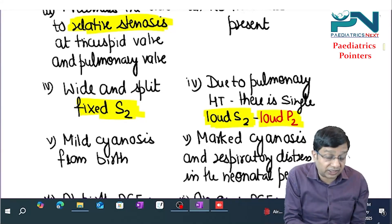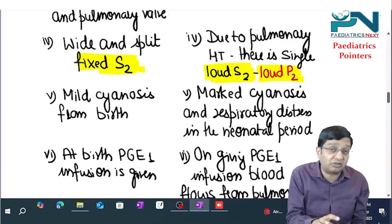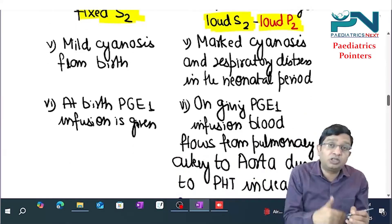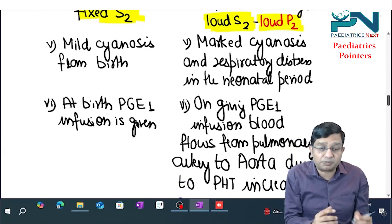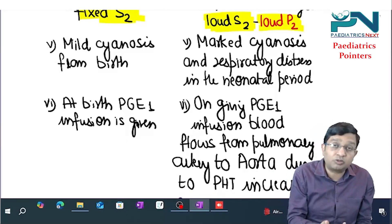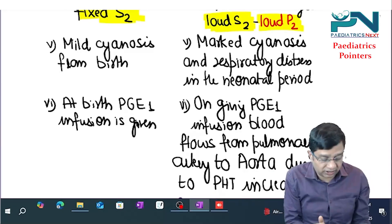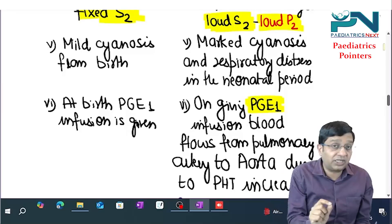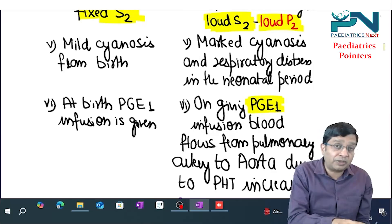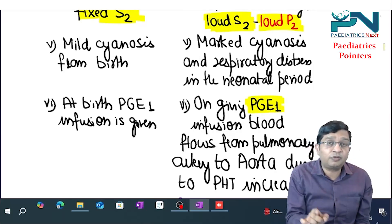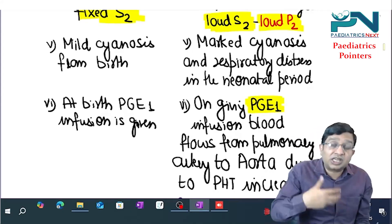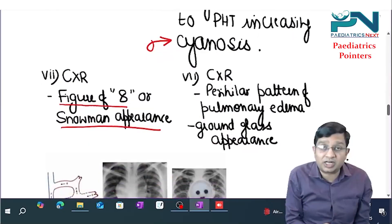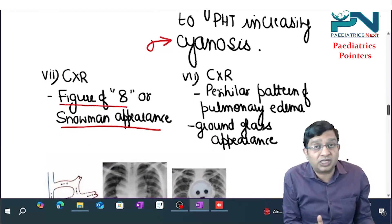The supracardiac type presents with mild cyanosis, but the infracardiac type presents with marked cyanosis and respiratory distress at birth. In the supracardiac type, prostaglandin E1 infusion is given to increase blood flow to the heart. However, in the infracardiac type, prostaglandin E1 infusion is contraindicated — because there is pulmonary hypertension, blood flows from pulmonary artery to aorta, worsening cyanosis. This is an important one-liner: do not give prostaglandin E1 in infracardiac type.